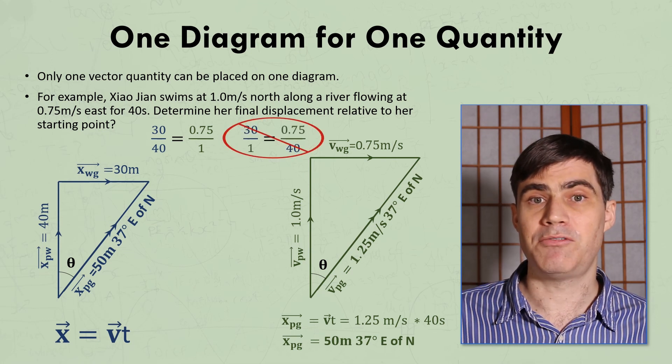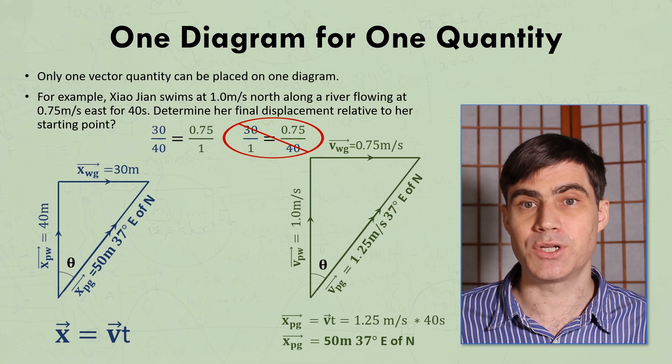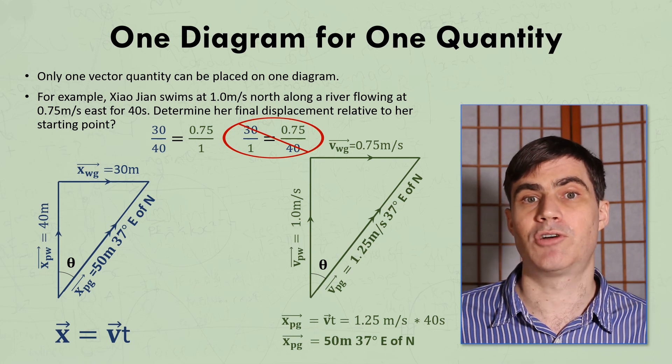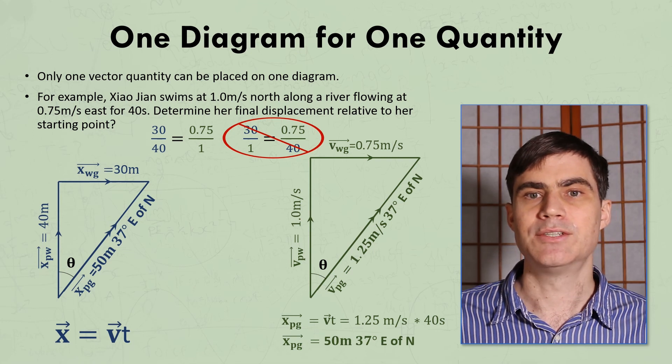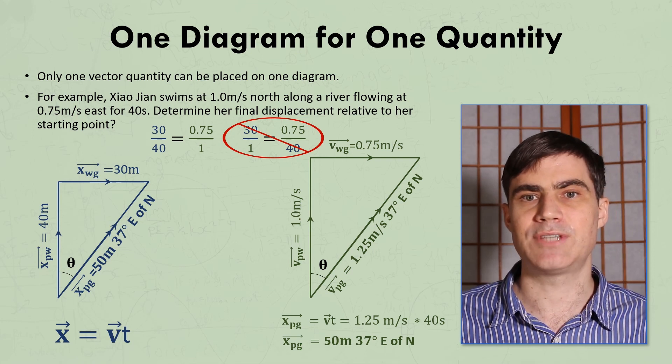But we cannot say 30 over 1 is 0.75 over 40, because they are only similar triangles. The magnitudes are different, so the triangles are effectively different sizes. So I suggest drawing them different sizes as I have here.